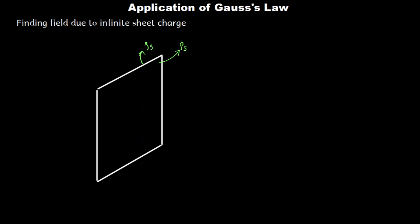Our intention is to find the electric field at some point which is very close to this sheet. Since we are applying Gauss's law, we have to choose the best possible closed Gaussian surface, and this point where we need to find electric field intensity should be on the surface of this Gaussian surface. The point is at some distance R from the sheet charge, and this distance is very small compared to the surface area, the length and breadth of the sheet charge. So we can treat this sheet charge as an infinite sheet charge compared to the distance of the point.